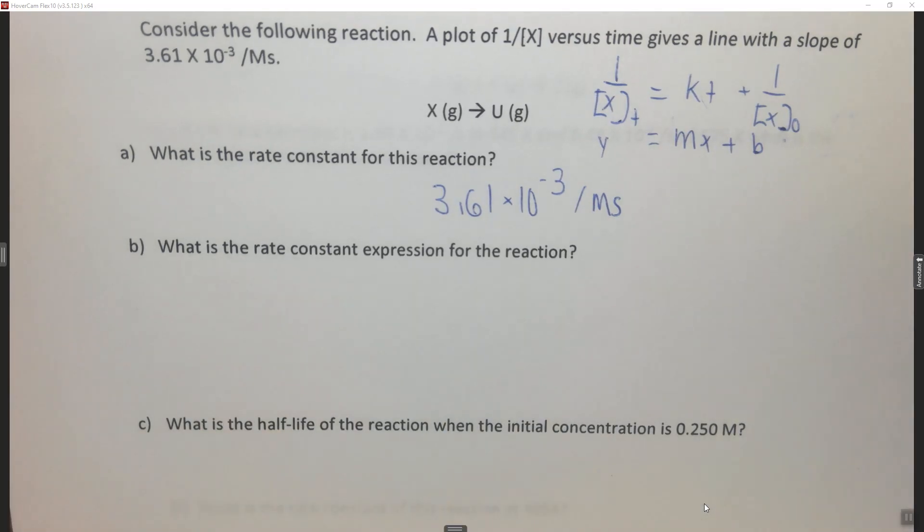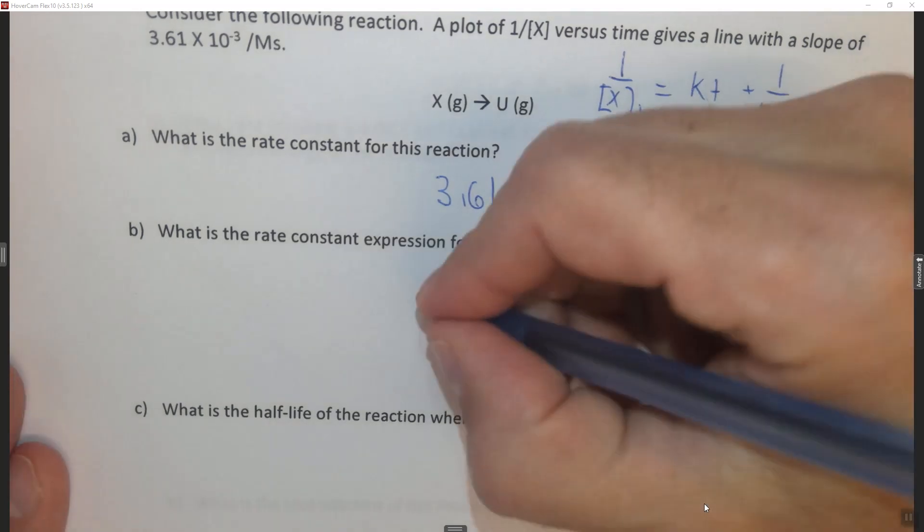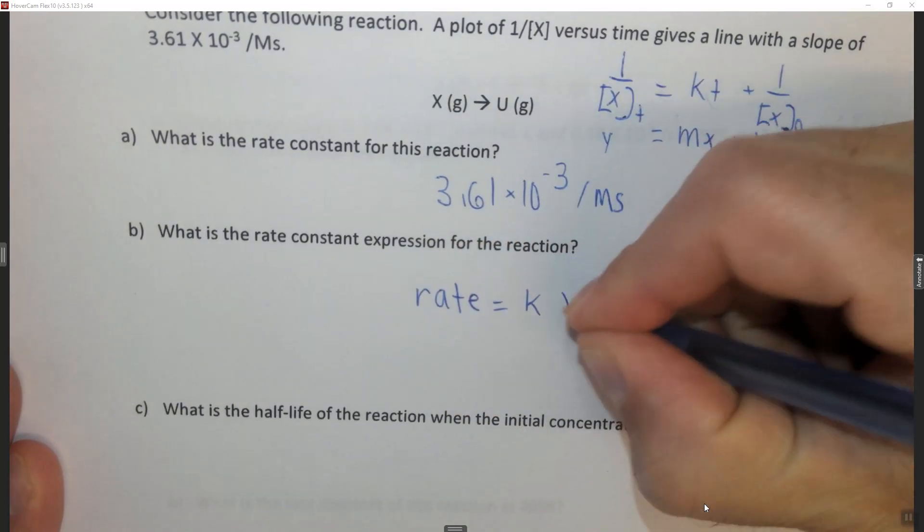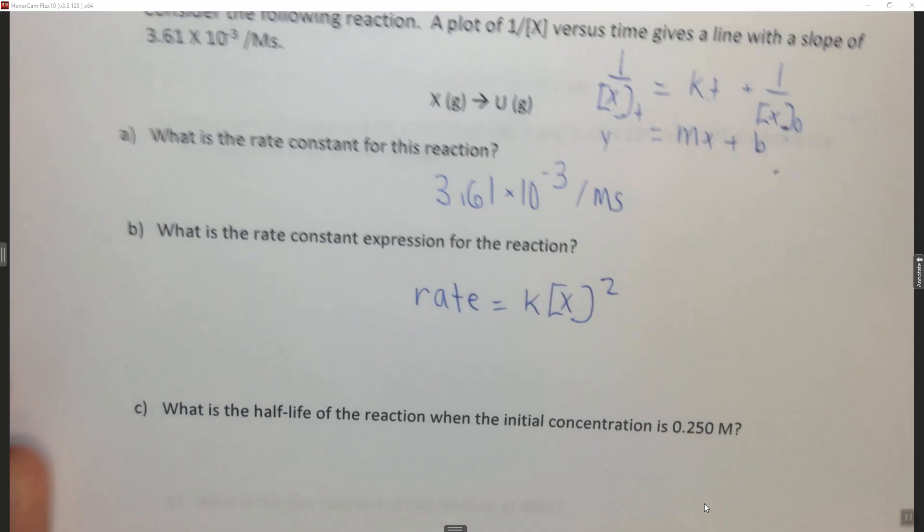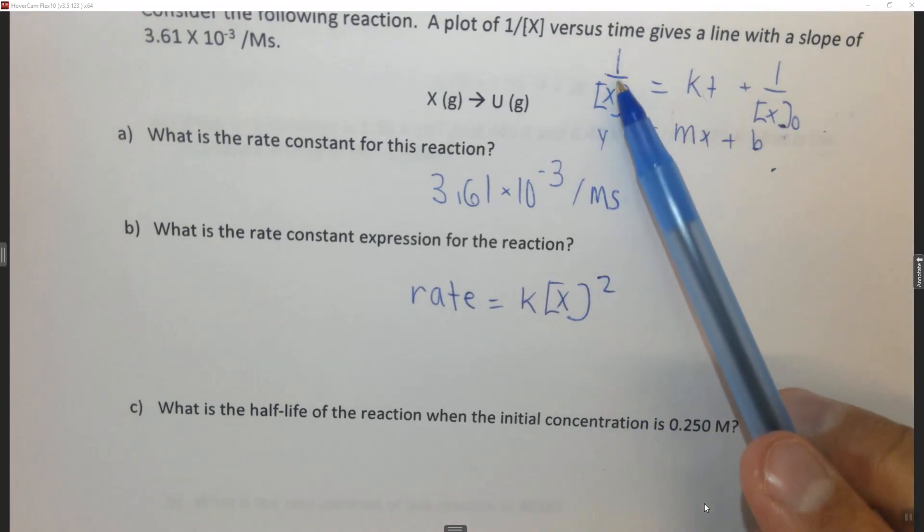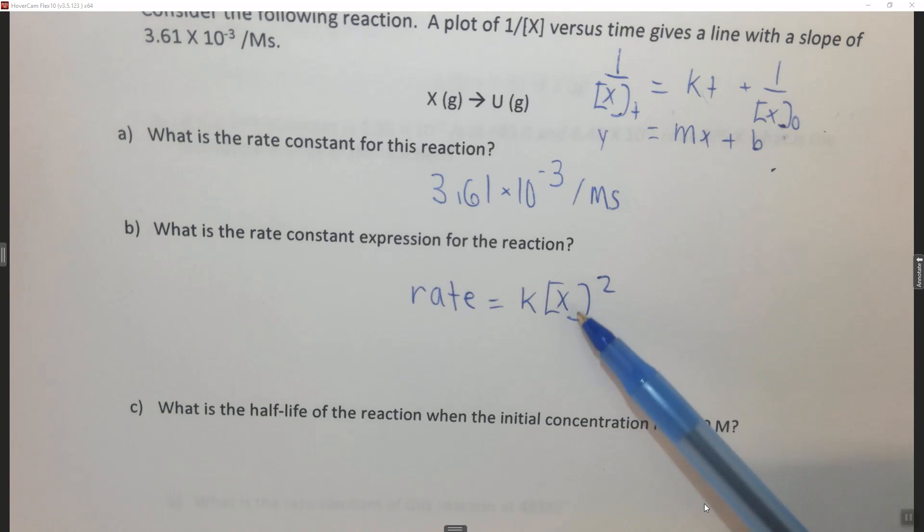So it says what is the rate constant expression for this reaction? So rate = k[X]² because we know it's a second-order reaction, because we got a straight line when we graphed 1 over the concentration of X at some time versus time. We know it's second order. We also know there's no other reactant, so we only know that it's second order with respect to X, but X is the only reactant, so we know it's second order overall as well.